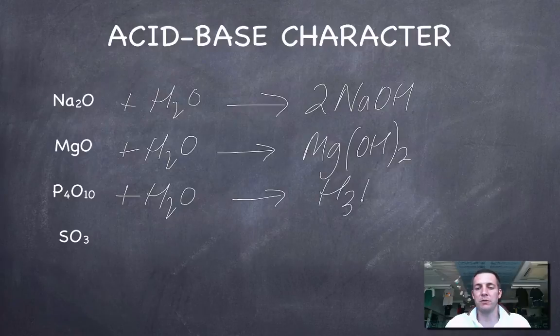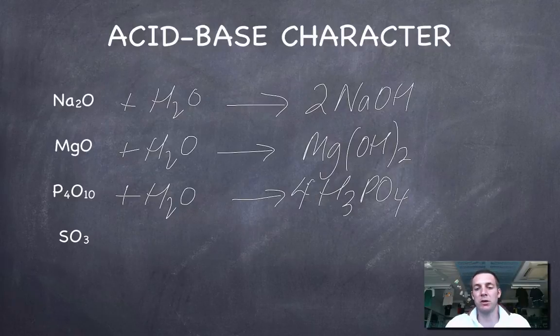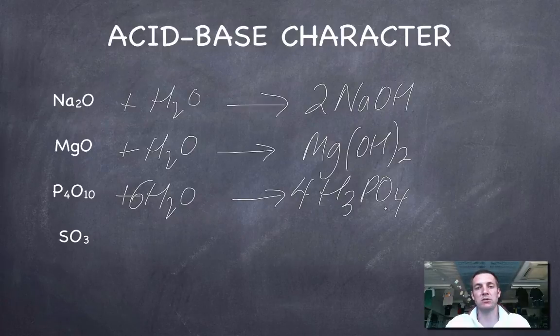You might know the formula for phosphoric acid, and certainly hopefully you would by the time you've done the acids and bases topic. But if you know that P4O10 forms phosphoric acid and this is the formula for phosphoric acid, then balancing this shouldn't be too tough. We've got four phosphoruses there, we've got one there so we've got four there. That gives us 12 hydrogens, so we need six waters, and now there's 16 oxygens there and 16 oxygens there.